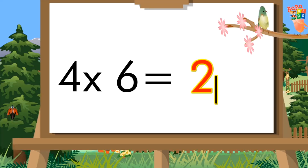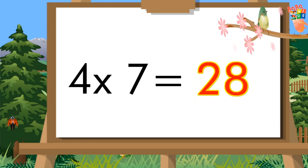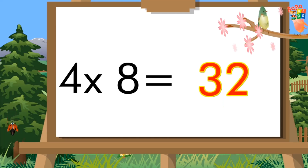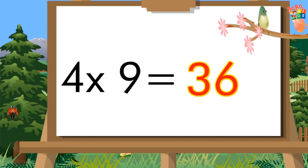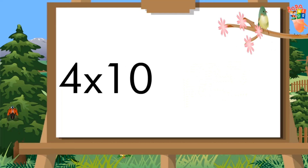Four, six's a twenty-four. Four, seven's a twenty-eight. Four, eight's a thirty-two. Four, nine's a thirty-six. Four, ten's a forty.